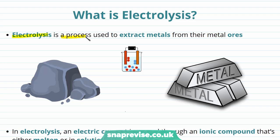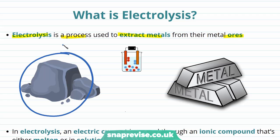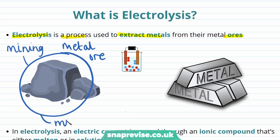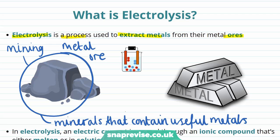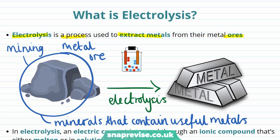Electrolysis is a process that is used in order to extract metals from their metal ores. On the left hand side of this diagram we have a metal ore. We obtain metal ores through mining and they contain minerals which are made up of useful metals. In order to obtain these useful metals, shown on the right hand side here, we can use the process of electrolysis.